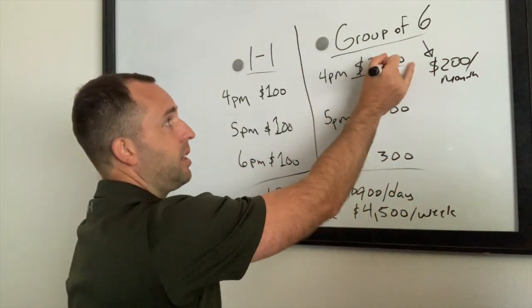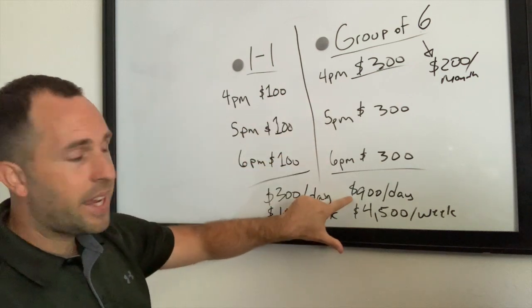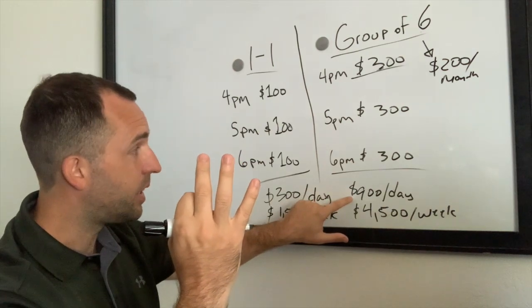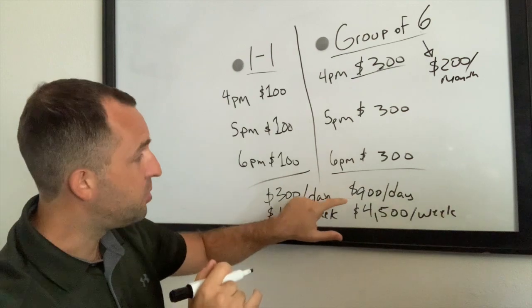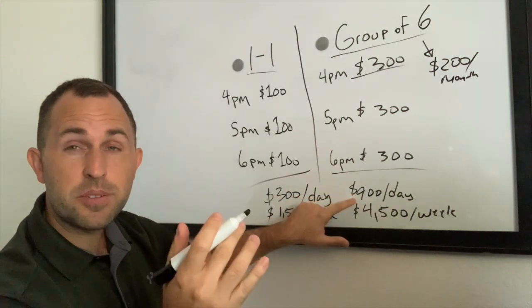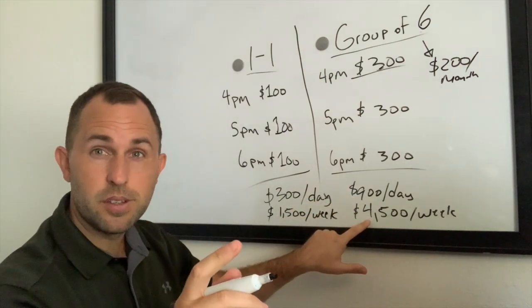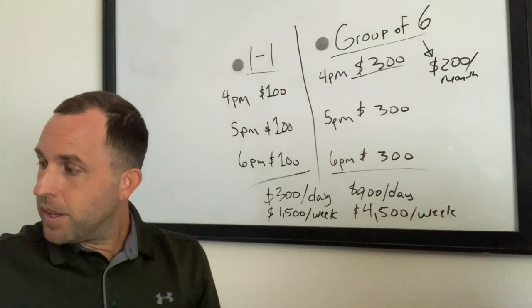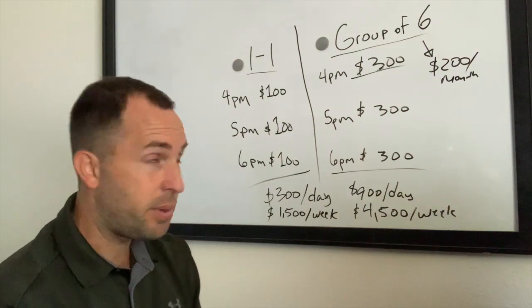Now the crazy thing about this model is in one night you can make $900 in one day, working three sessions. So you can go and crunch the numbers, this is not a typo. You make $900 in one day. Now if we multiply that out times five days in one week, you're making $4,500 per week.